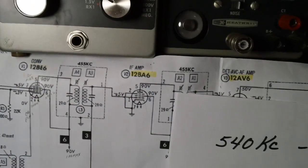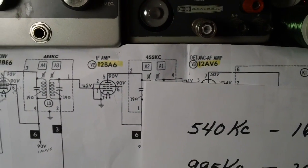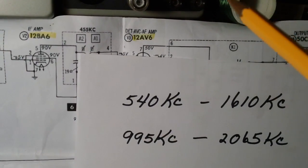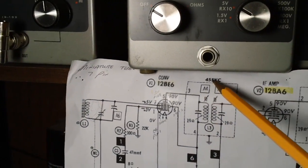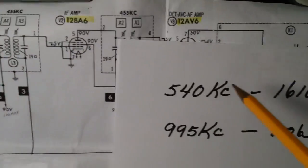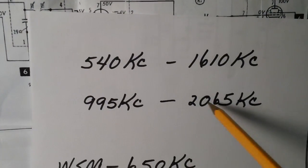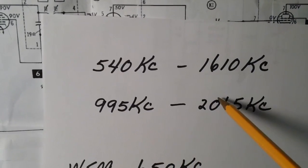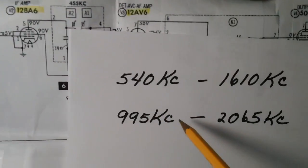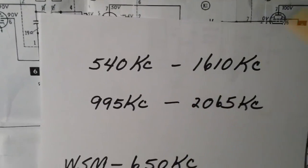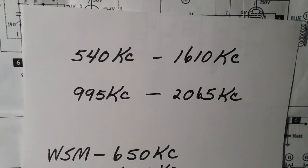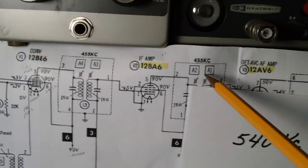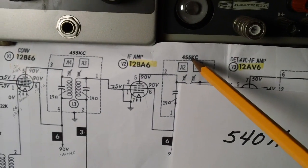The difference between those two tunable ranges — between 540 and 995, and between 1610 and 2065 — is 455 kilocycles. That 455 kilocycles is the intermediate frequency of this particular radio. If your radio had a different IF, such as 265 kilocycles, those numbers on the second set of plates would be different. It all depends on your intermediate frequency, which is always printed somewhere on the schematic.